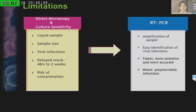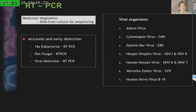RT-PCR mainly amplifies the sample and helps us identify organisms. It yields faster results, is more sensitive and more accurate, and helps identify polymicrobial infections and especially viral infections. We send AC taps and vitreous taps to the lab which yields results. We normally ask the microbiologist to give us eubacterial or pan-fungal results, or in case we are suspecting a specific virus, we specify what type of result is required. It basically uses the DNA from the culture for sequencing and amplification to give us the result.